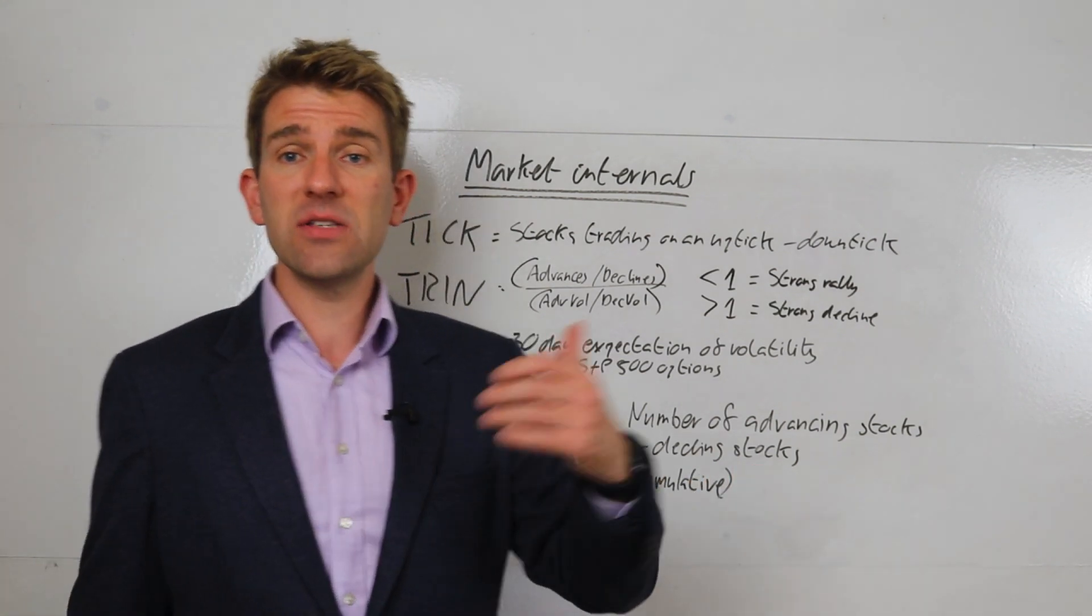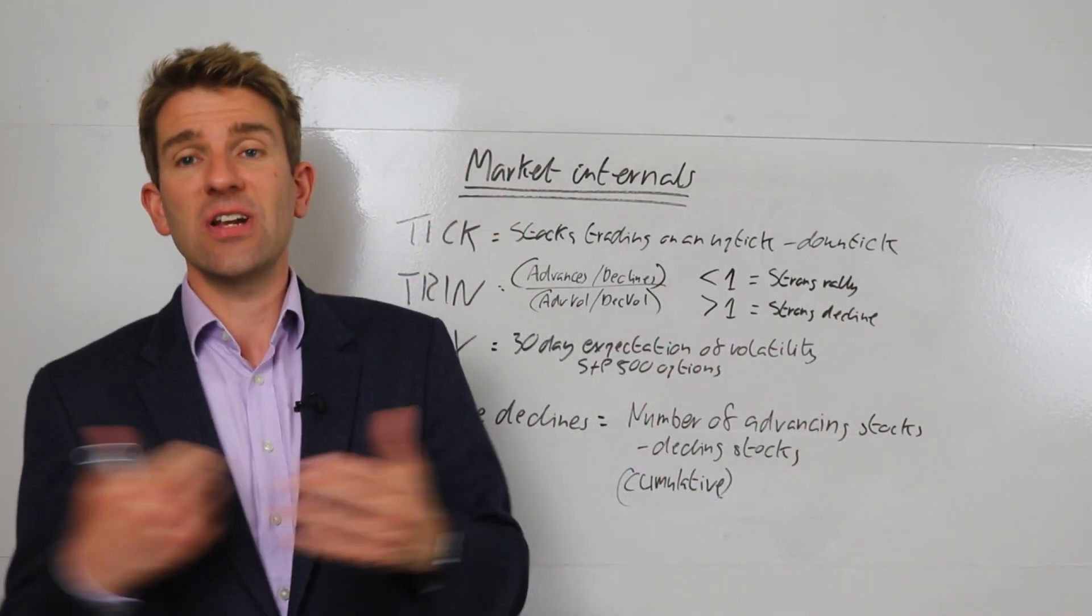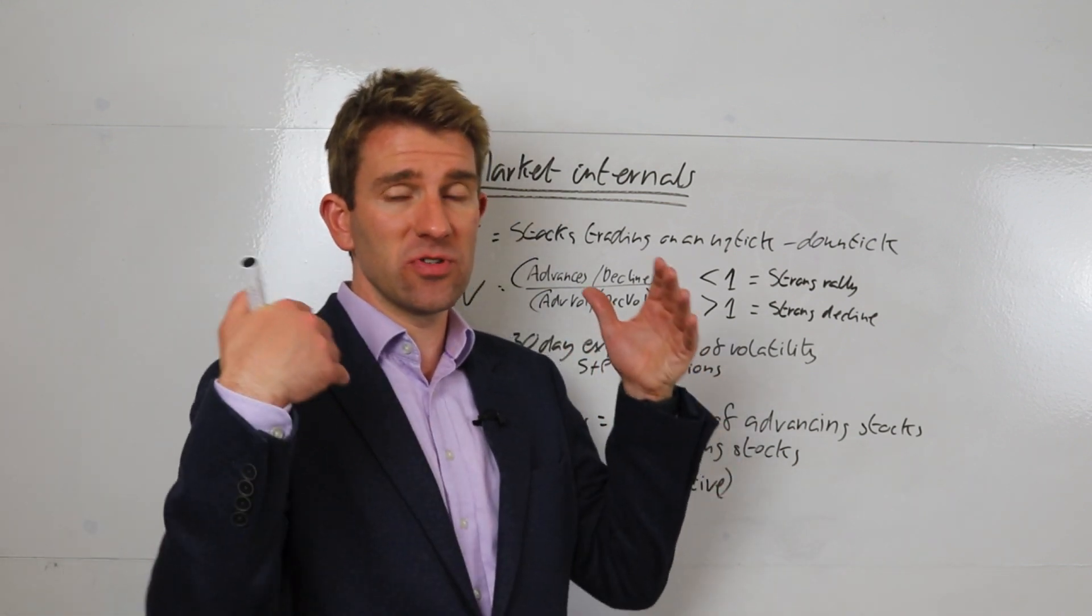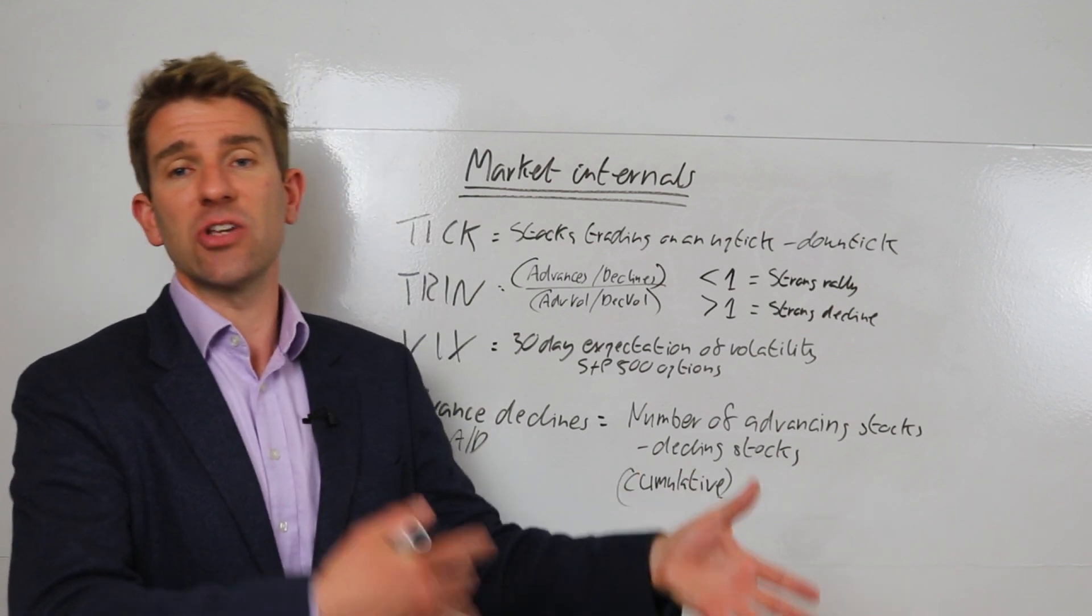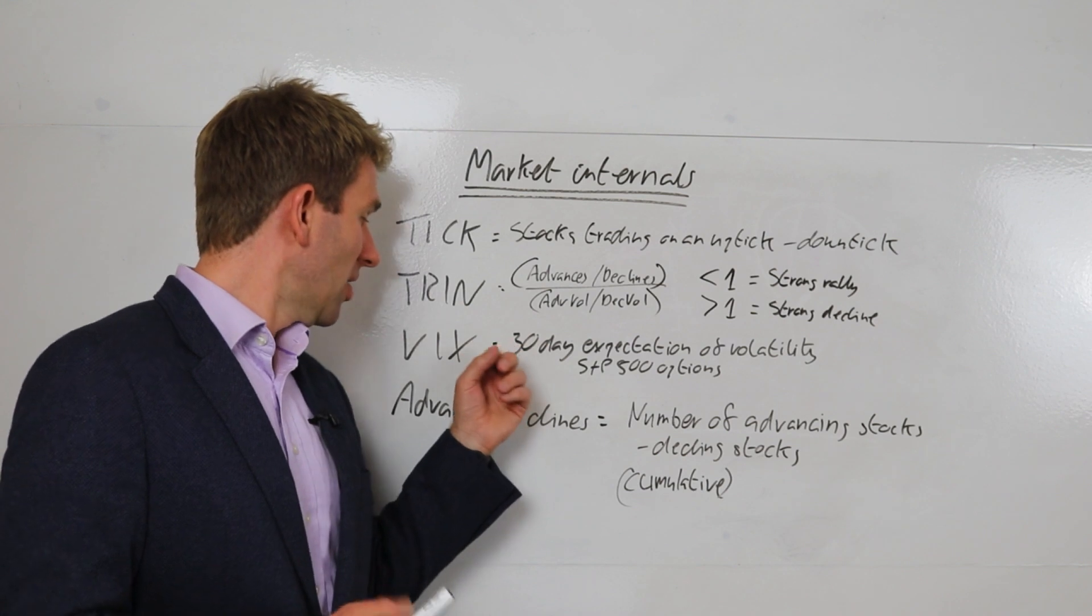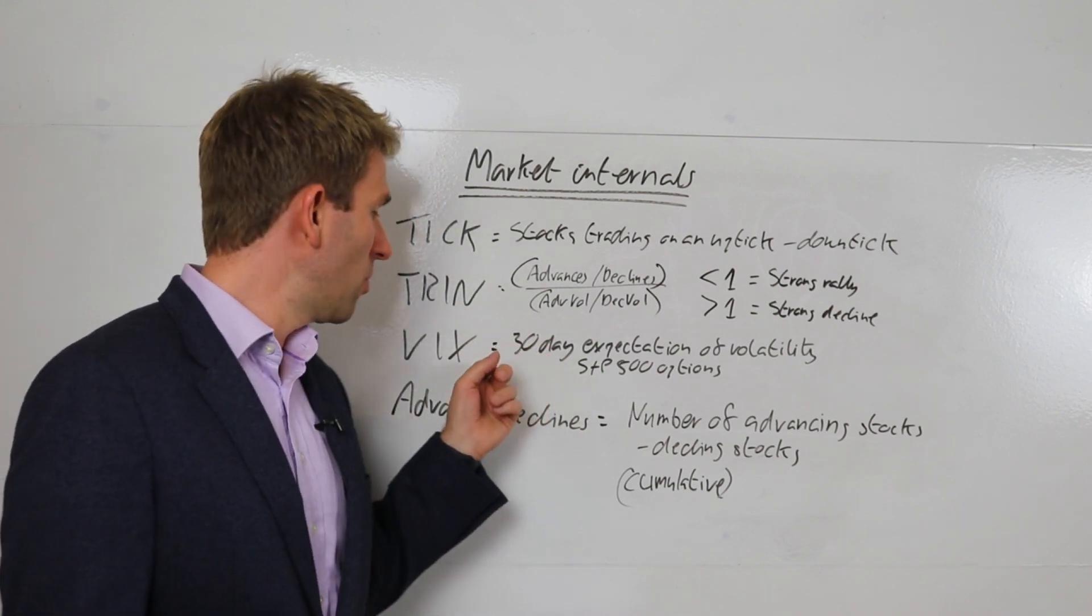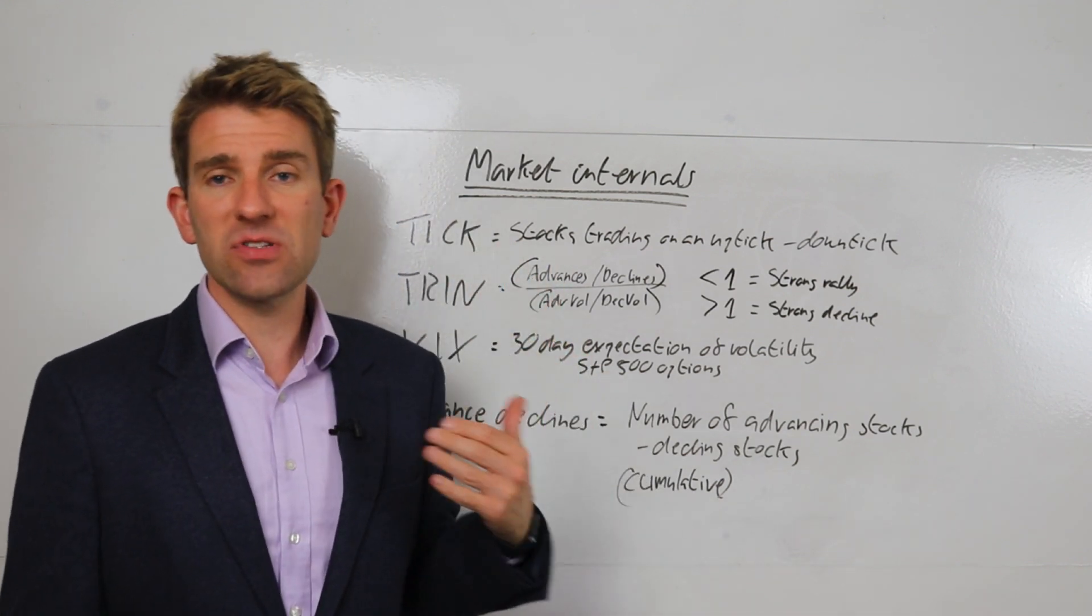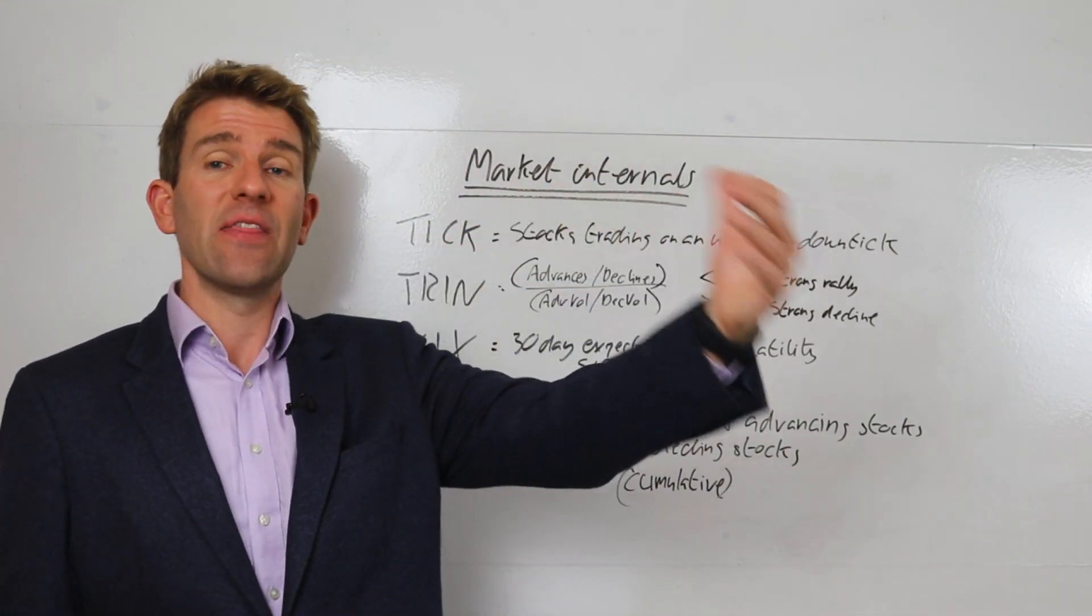VIX - probably familiar with VIX, guys. If you're not, it is really simply the 30-day expectation of volatility and it's based on the S&P 500 options. So the S&P 500 options, the volatility component of those, if you like, is extracted out and put into an index, and that will rise and fall with the market. You could quite easily approximate this by using an ETF if you wanted to - a VIX ETF. There's loads of them out there. The theory being that as volatility increases, also as the VIX increases, the expectation of volatility increases.